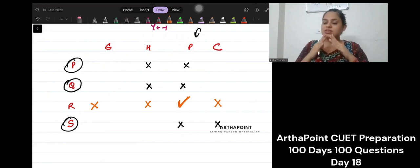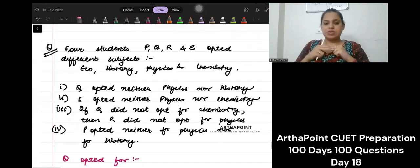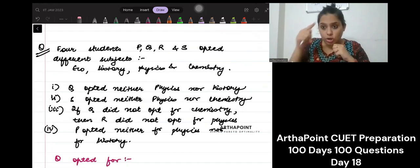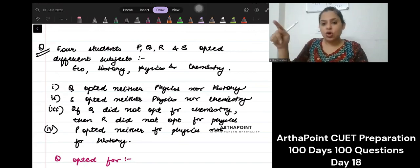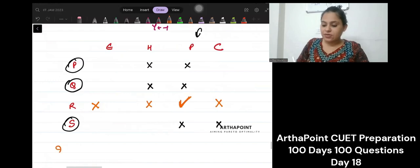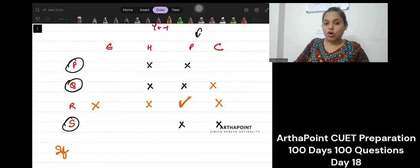Now we are left up with three subjects. P, eco, history and chemistry which needs to be divided in these three students. Now let's read out the last statement, third statement. If Q did not opt for chemistry, then R did not opt for physics. So if Q did not take chemistry, then R will not take physics. But R has taken physics. So Q must have opted for chemistry.